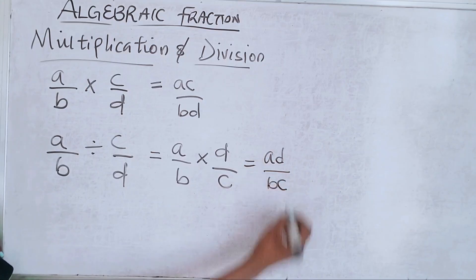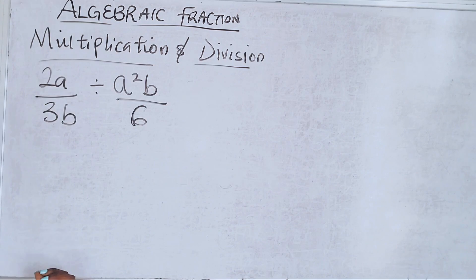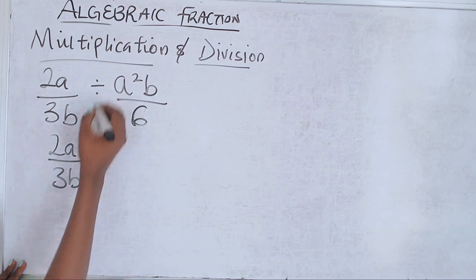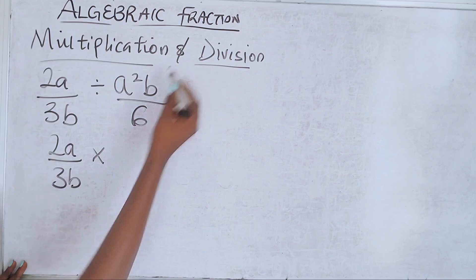Now in a case where we see so many letters instead of numbers, do not panic. First things first: write the first fraction, then change the division sign to a multiplication sign, then reverse the second fraction.